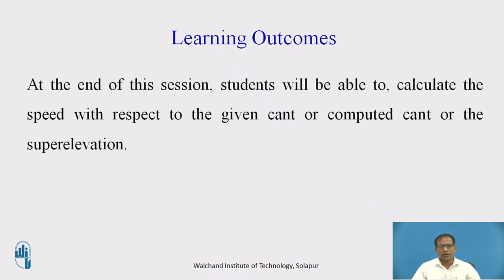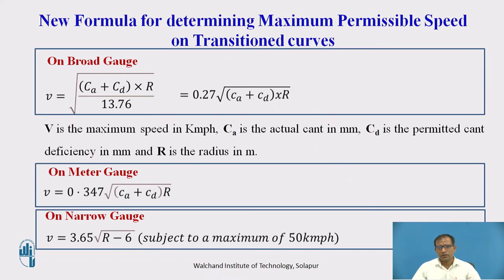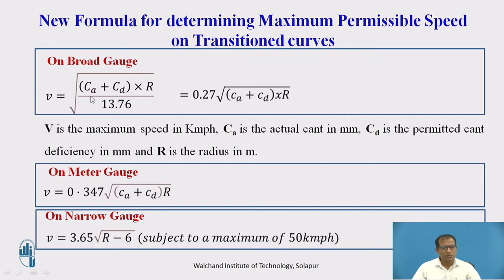Continuing from that, we will see how the safe speed is calculated for given conditions. This is how we have calculated the safe speed using the Railway Board formula, considering the actual cant and cant efficiency, to get the maximum permissible speed on a particular curve.